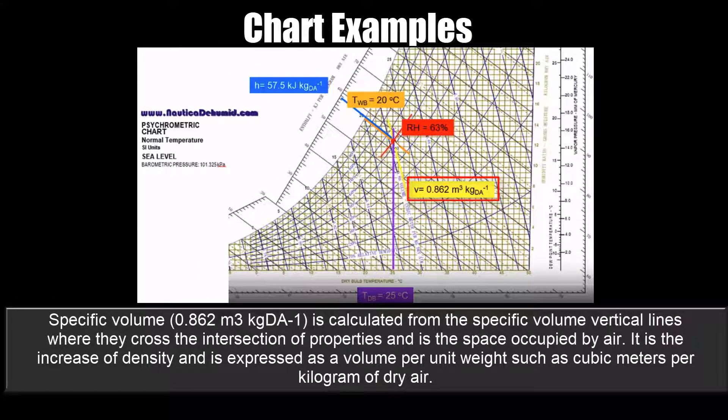Specific volume is calculated from the specific volume vertical lines where they cross the intersection of properties and is the space occupied by air. It is the increase of density and is expressed as a volume per unit weight, such as cubic meters per kilogram of dry air.